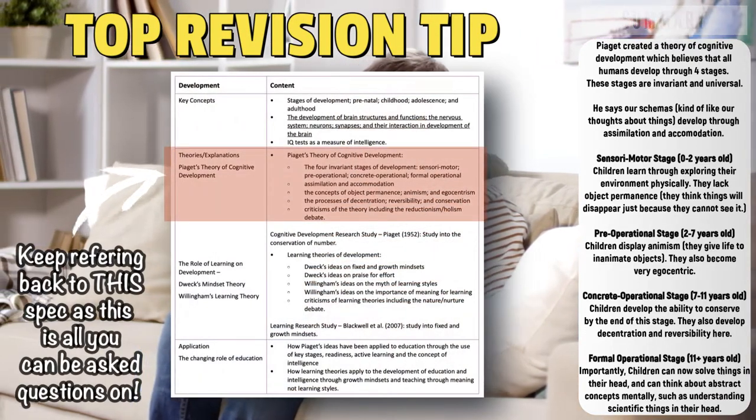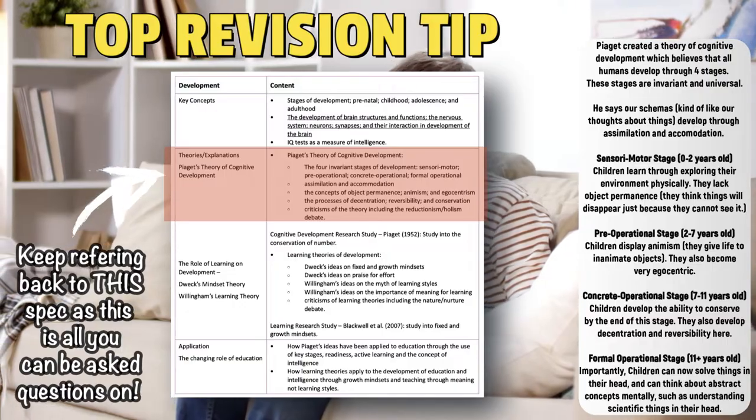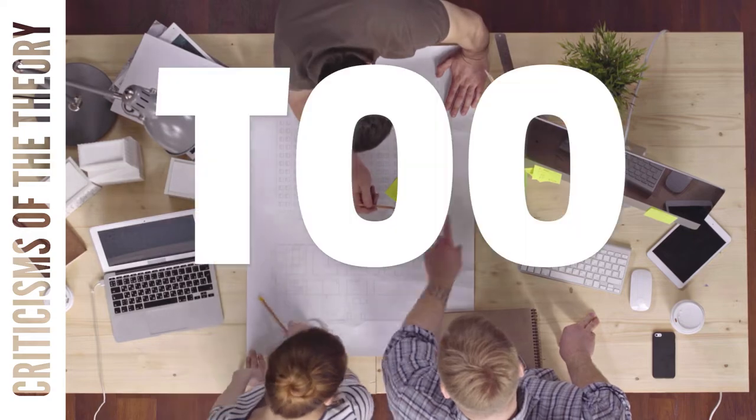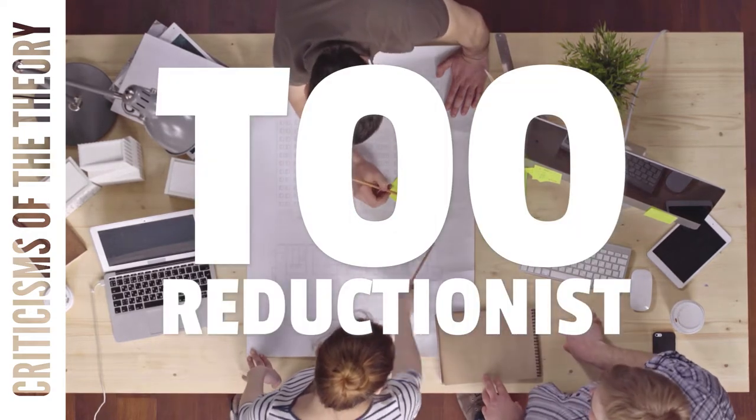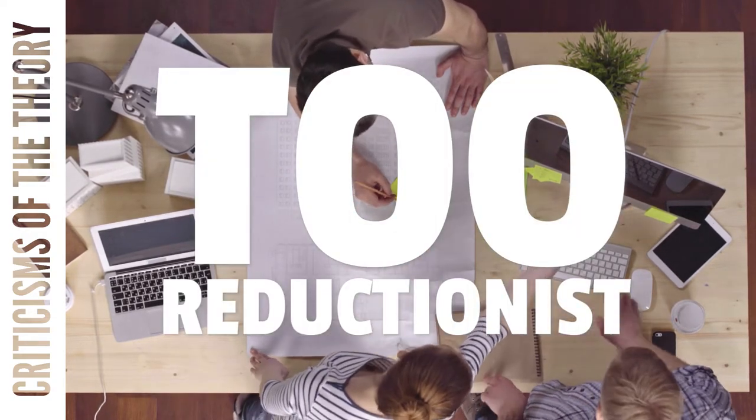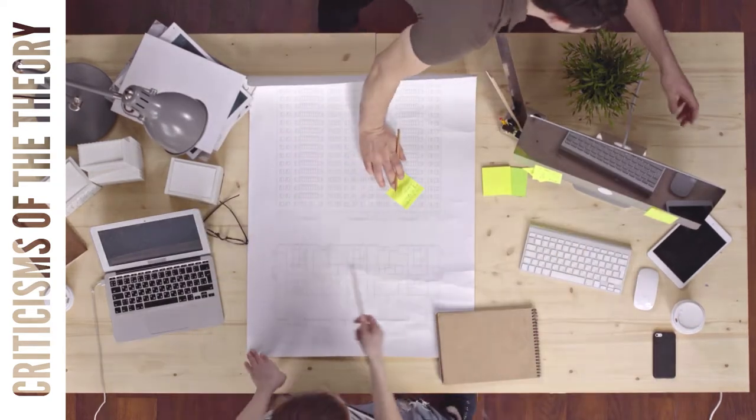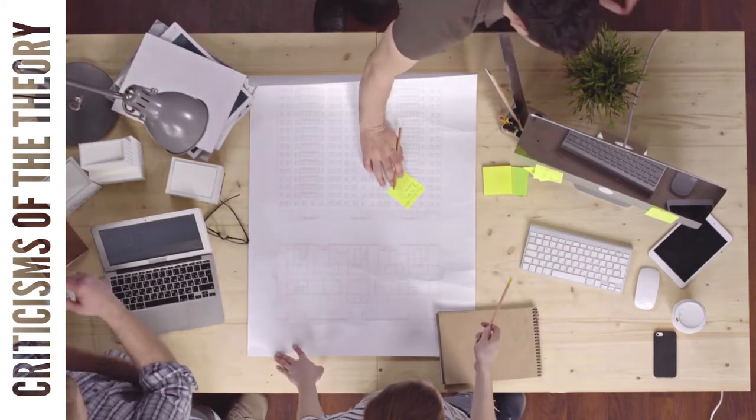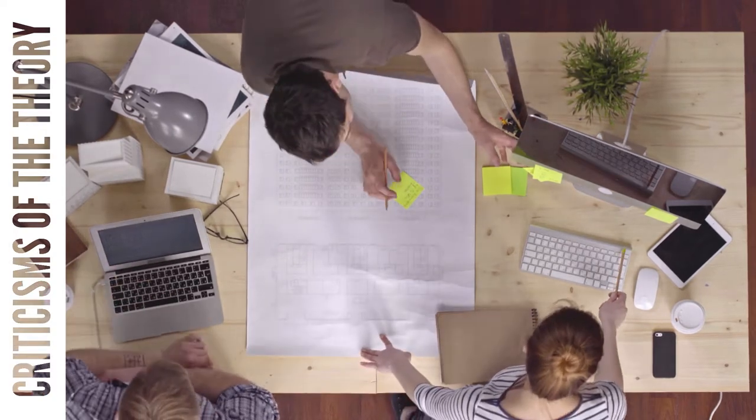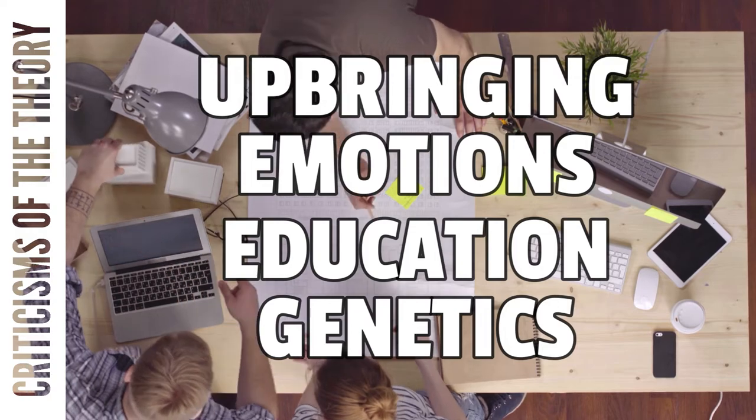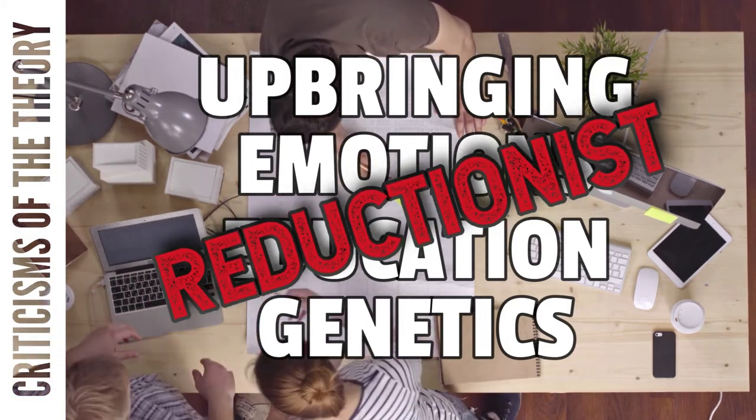Just like all the other theories, Piaget's theory is absolutely not perfect. The main criticism is that it's too reductionist. This is one of the debates that we need to know, and I'm going to do a video on this. The reason that Piaget is reductionist is because it doesn't take into account all sorts of things like your upbringing, your emotional state, your standard of education, genetics. Therefore, it's too reductionist - it doesn't take everything into account.